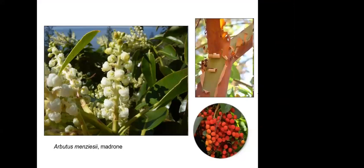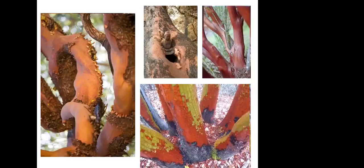Madrones certainly have flowers and are typical classic trees of higher-elevation mixed evergreen woodlands. They're in the same family as blueberries, huckleberries, and manzanitas — the Ericaceae family — with classic urn-shaped or campanulate flowers. They produce berries just like huckleberries and manzanitas do. They have really interesting peeling thin bark, and when you touch the cambium it feels cool because the water-transporting vessels are right below the surface.